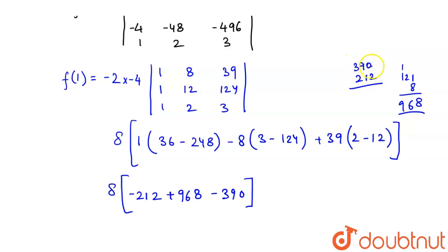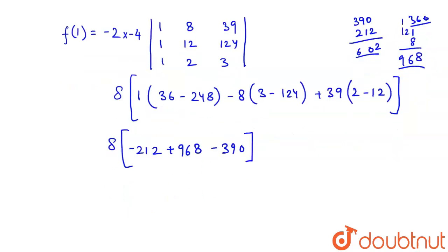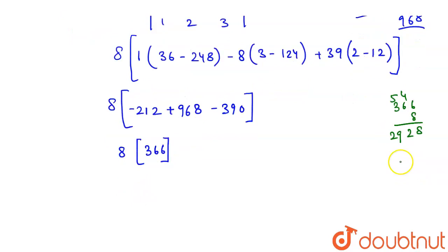This comes out to be 8 into minus 212. This is 8 into 366. Let's have a look. I get 366 into 8, so 8 6s are 48, 4 carry, 8 6s are 48, 2 5 carry, 8 3s are 24 and 29. So this becomes 2928. So this is my f of 1 is 2928.